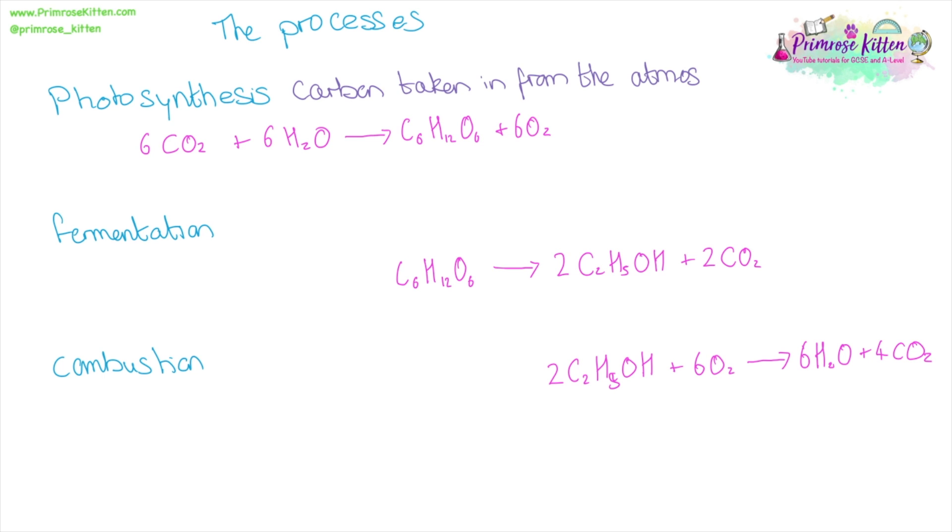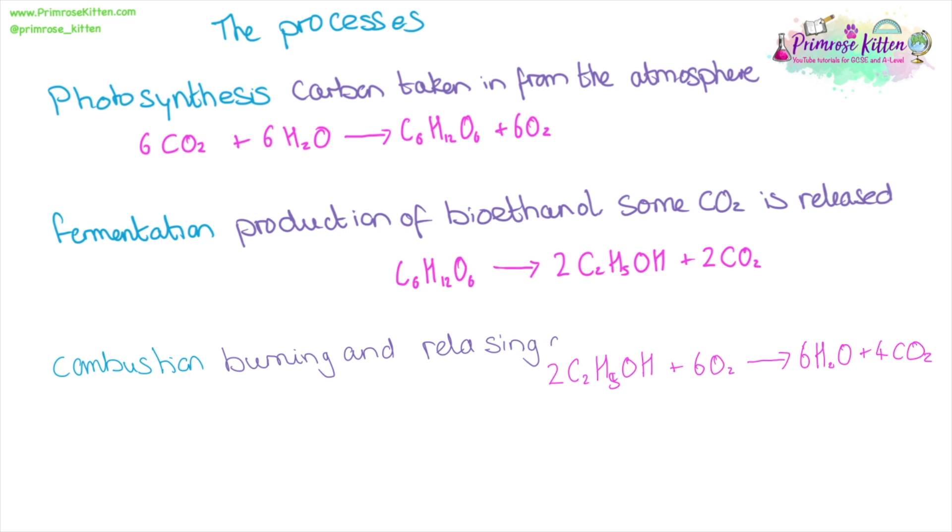During photosynthesis, we have carbon taken in from the atmosphere. The process uses takes in six carbon dioxides from the atmosphere. In fermentation, the production of the ethanol, two carbon dioxides are released as a waste product. In combustion, in the use of the bioethanol, we have the release of more carbon dioxide. So we have six carbons, six carbon dioxide going in. This is converted to six carbons in glucose. In this part, we are going to be following the carbons.